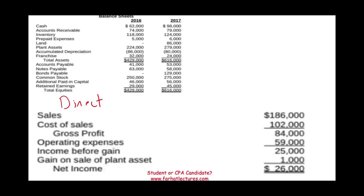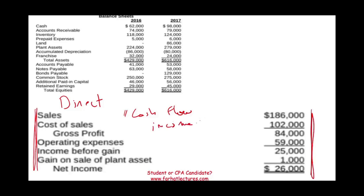What is the operating section of the statement of cash flows? Simply put, the operating section is taking the income statement — the regular income statement that you have — and converting the income statement into a 'cash flow income statement.' This is what the operating section is, in my opinion. It's taking the income statement and showing you on a cash flow basis whether you are making a profit.